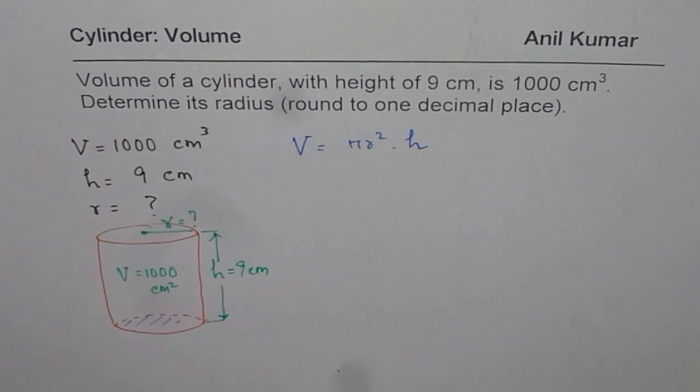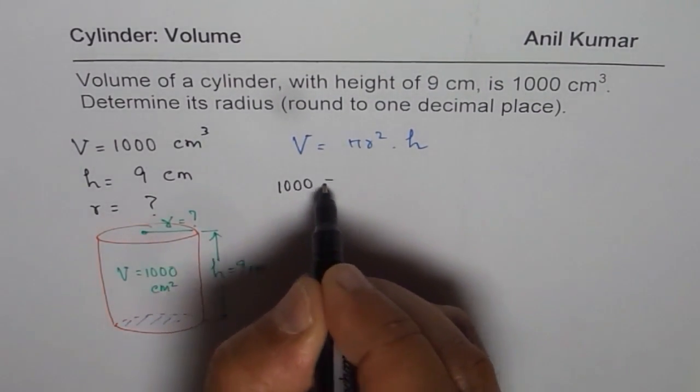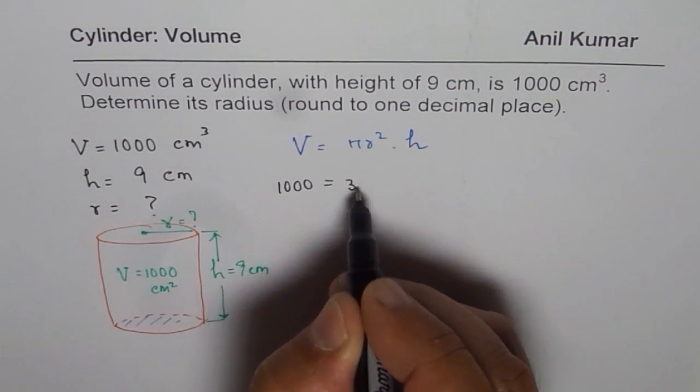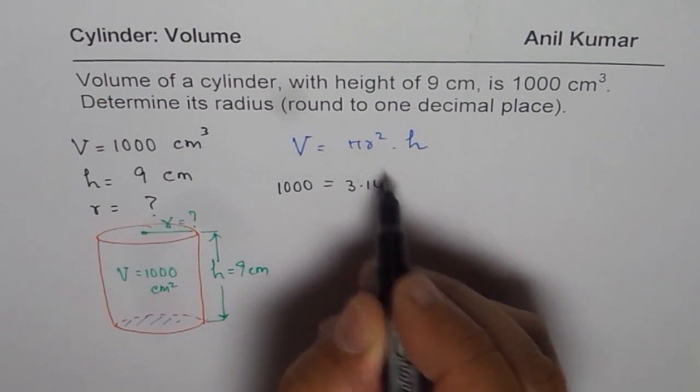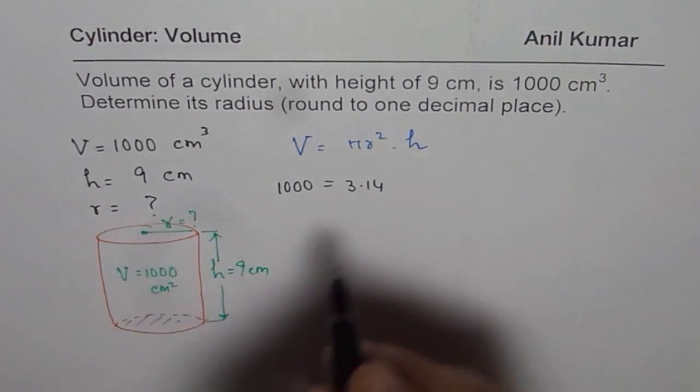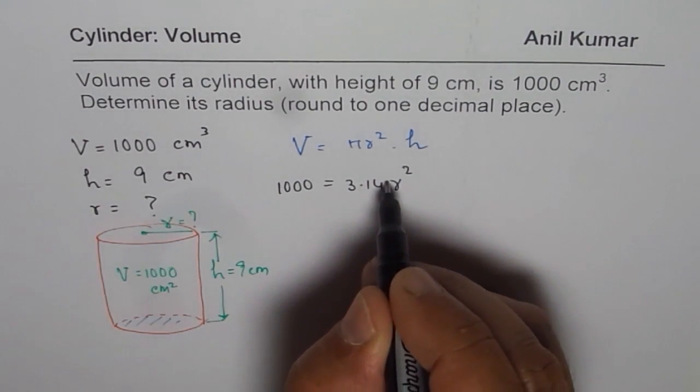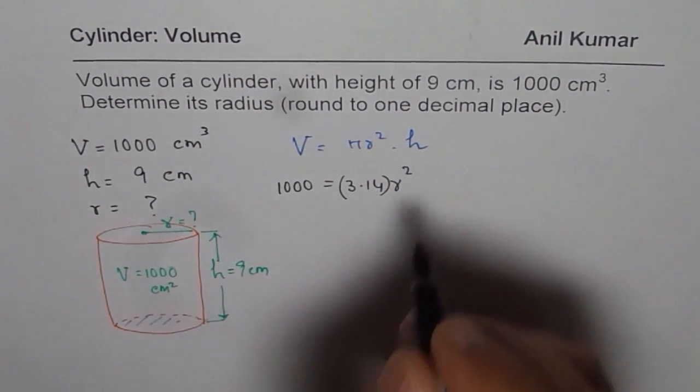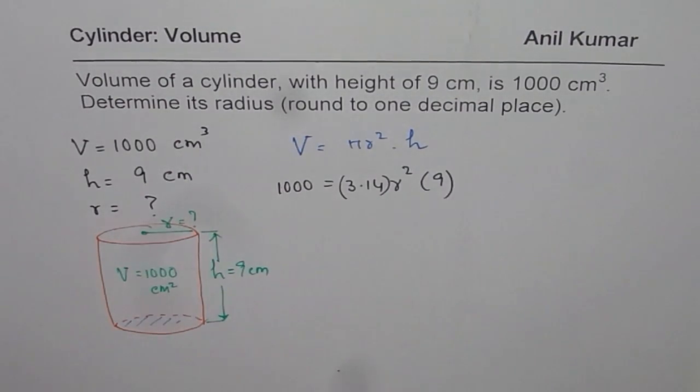And in this formula we are given volume. Let's write down 1000 equals to pi which you could write as 3.14 times radius square. 3.14 times radius square. And height is 9. So we can write 9 here.